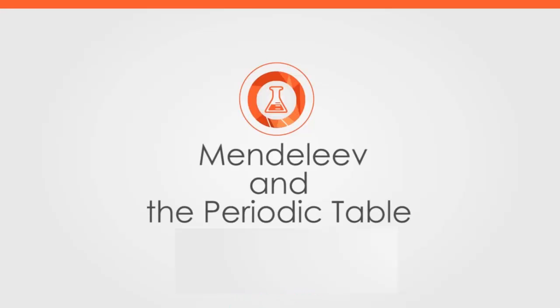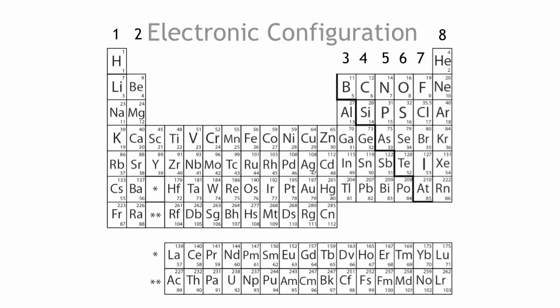The periodic table is a table that organizes the elements by their atomic number, electronic configuration, and chemical properties.